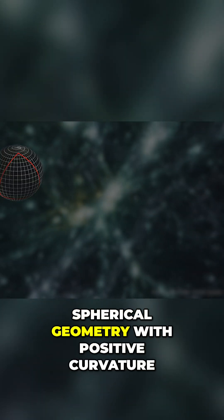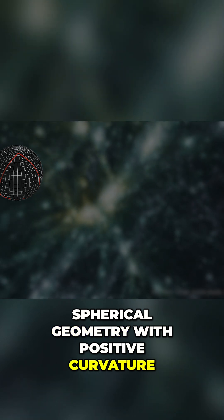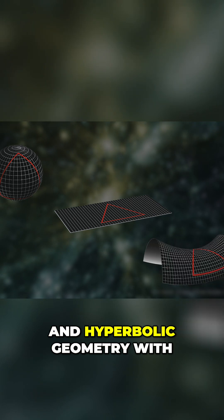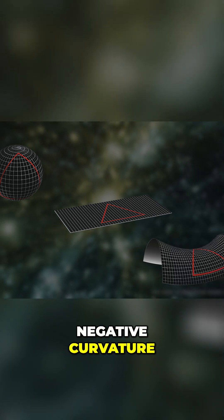Spherical geometry with positive curvature, flat or Euclidean geometry with zero curvature, and hyperbolic geometry with negative curvature.